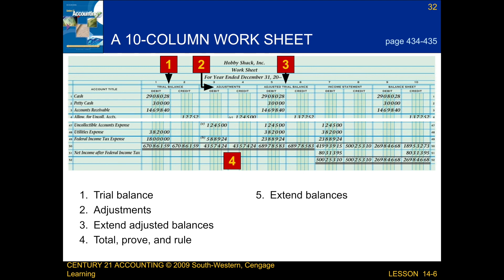Number five is showing us that we extend the account balances to the balance sheet and income statement columns. Number six is showing us that we calculate the net income and also that we total, prove, and rule the balance sheet and income statement columns.